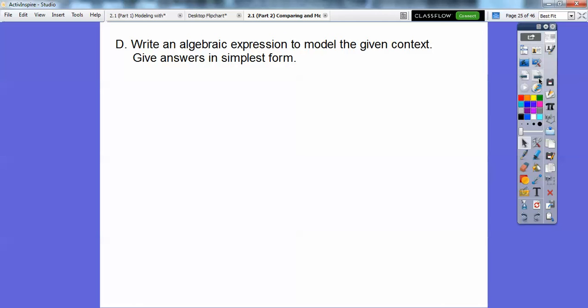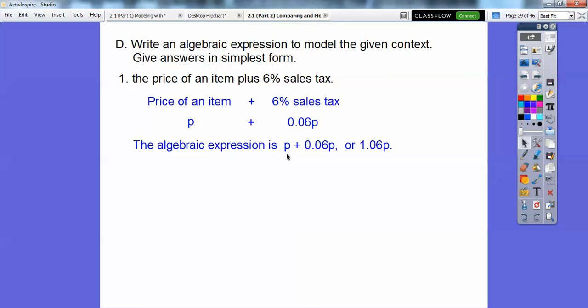Write an algebraic expression to model the given context and give answers in simplest form. The price of an item plus 6% sales tax. We're going to do price of an item and add 6% sales tax. Since we don't know the price, we'll just call it P for price, plus 6% of P. So 6% is 0.06. You move the decimal back one, two places when you change a percent to a decimal. This is 1P plus 0.06P, which is 1.06P. The algebraic expression would be P plus 0.06P or 1.06P. It's 100% of the price plus 6% of the sales tax. So it's 106%.